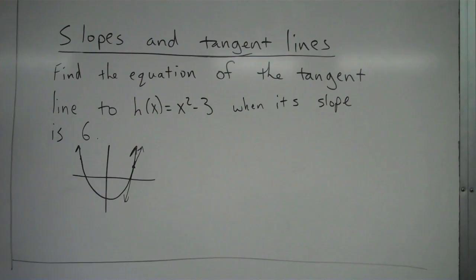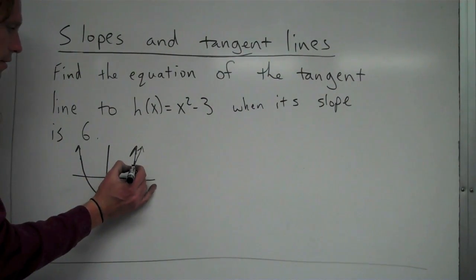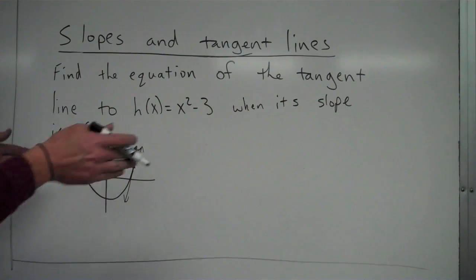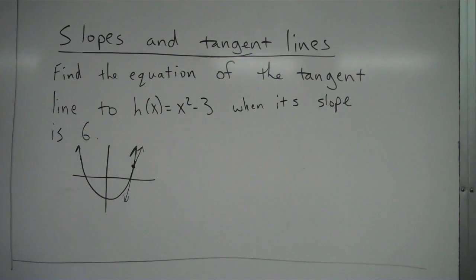Not the greatest tangent line I just drew. So what we need to figure out right now is when does this graph have a slope of 6? Because wherever it has a slope of 6, that's where we have to make our tangent line.